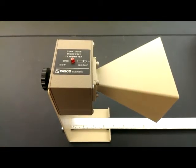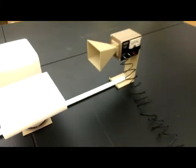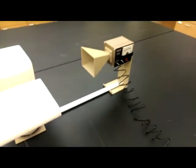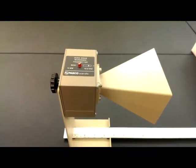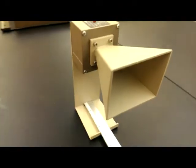The first piece to be aware of is the transmitter. Note that the transmitter and the receiver look similar, but the receiver has a dial on it and the transmitter does not. Now something that's very important to know about the transmitter is that microwaves come out of here.